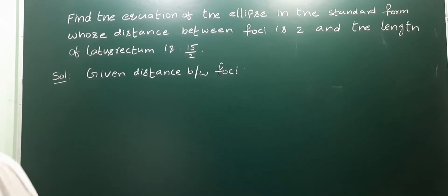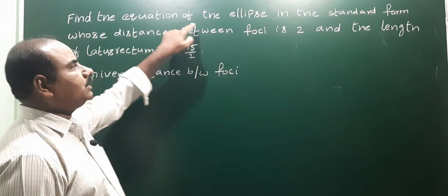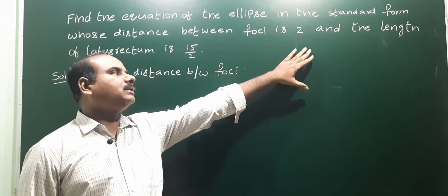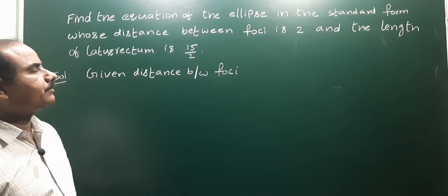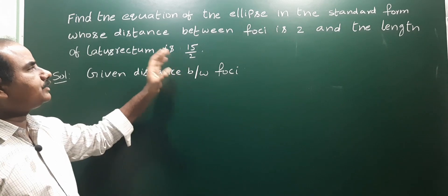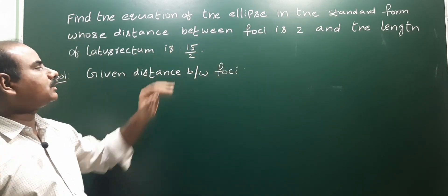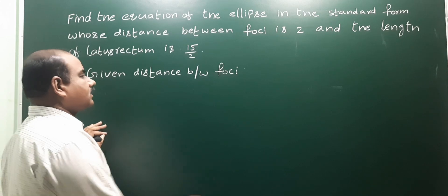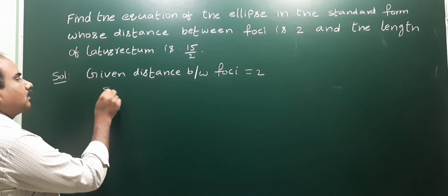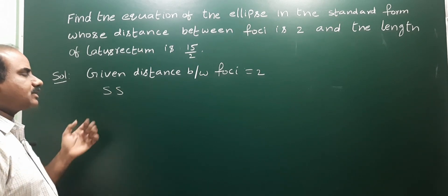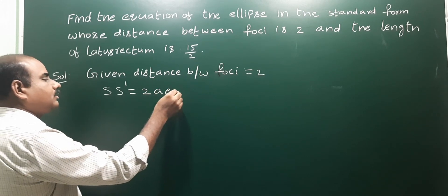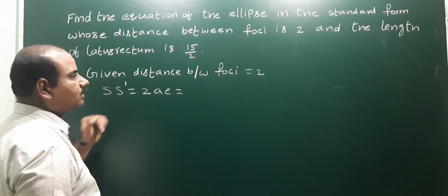Find the equation of the ellipse in standard form whose distance between foci is 2 and the length of the latus rectum is 15 by 2. For the standard formula, the distance between foci — where S and S' are the two foci — is given by the formula 2ae, with the condition a greater than b.